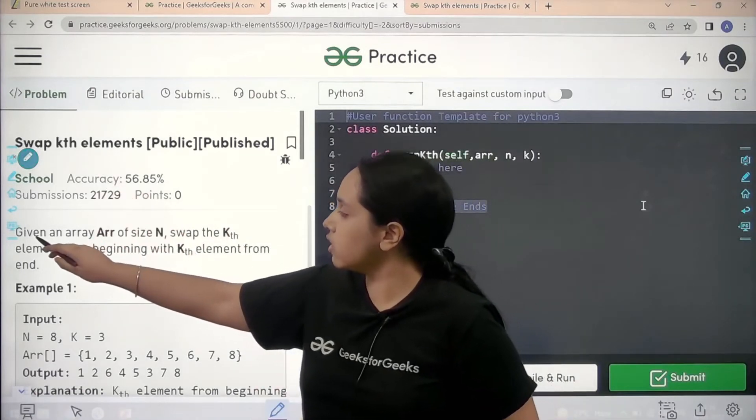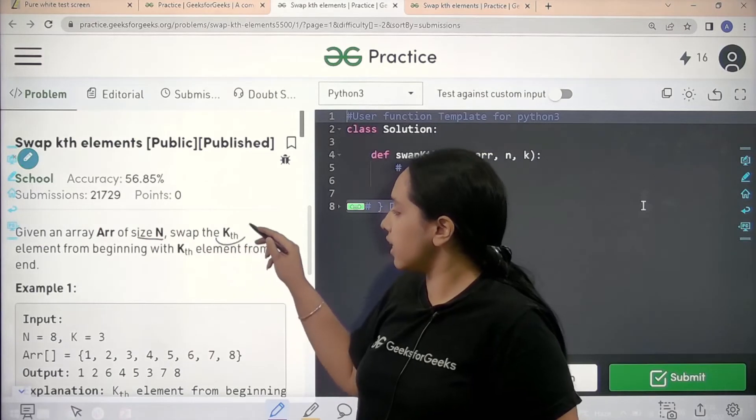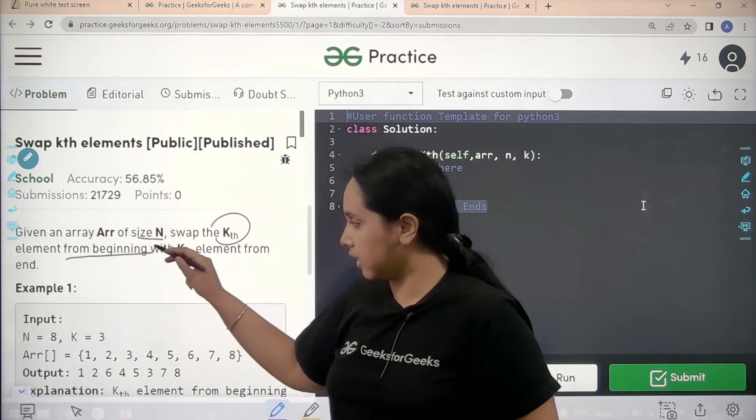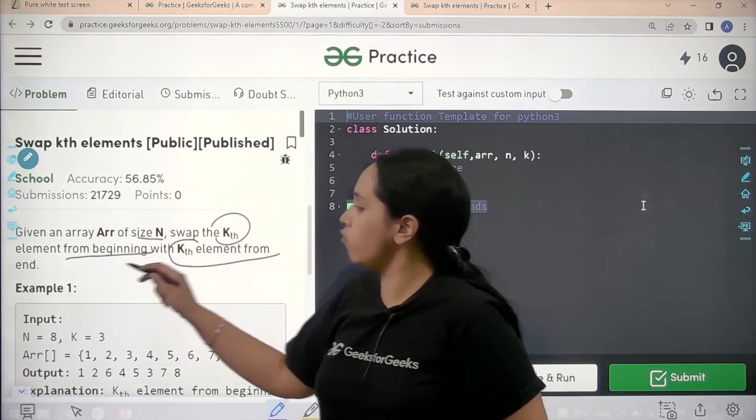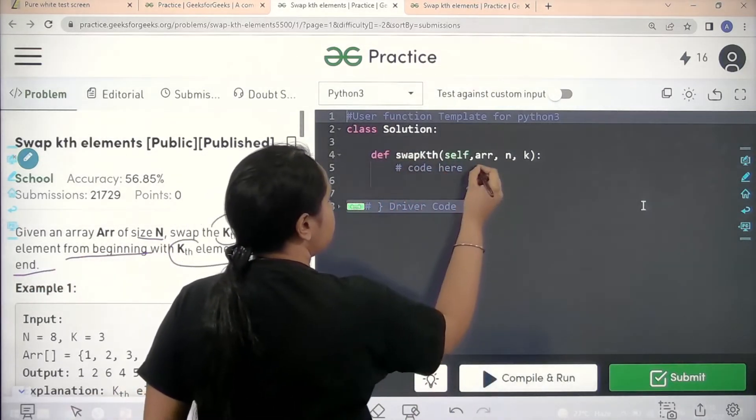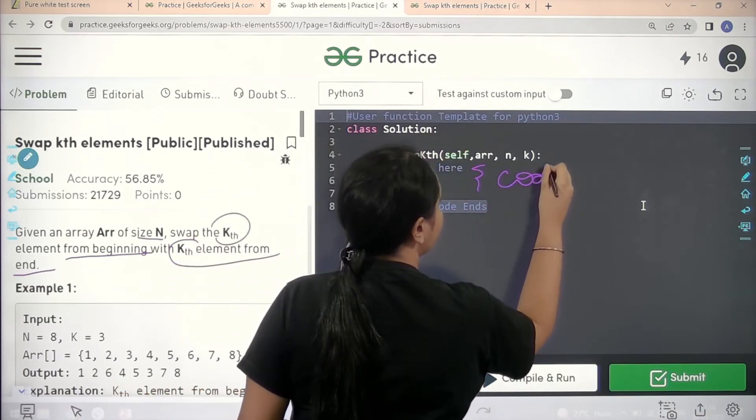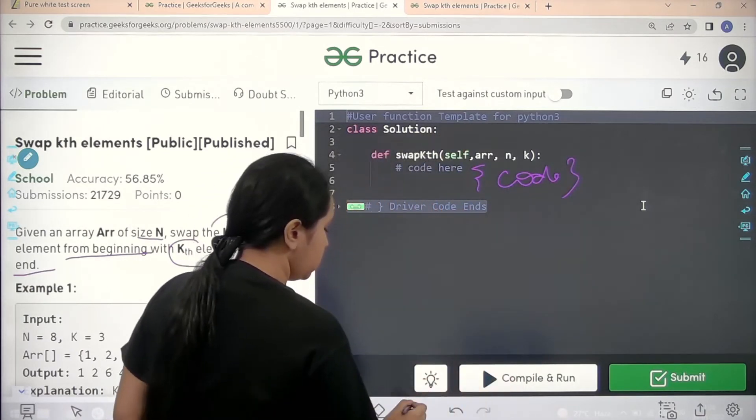Now let's see it. Let's read the question. Given an array of size n, swap the kth element from the beginning to the kth element from the end. So now once we read the statement, let's move forward to the code part. Over here we need to code. So now let's do that.